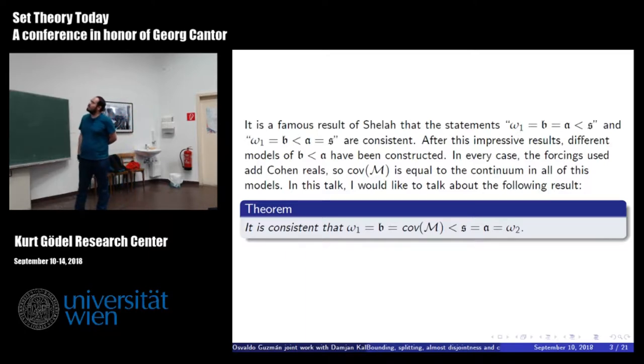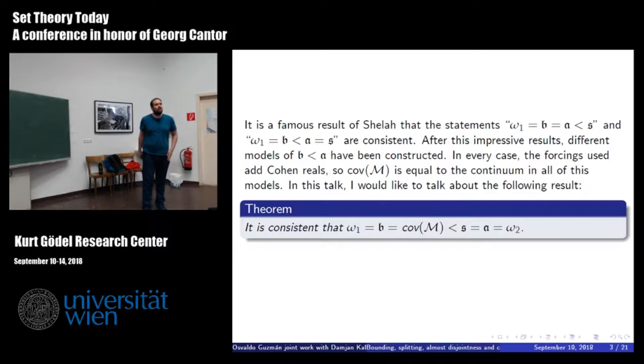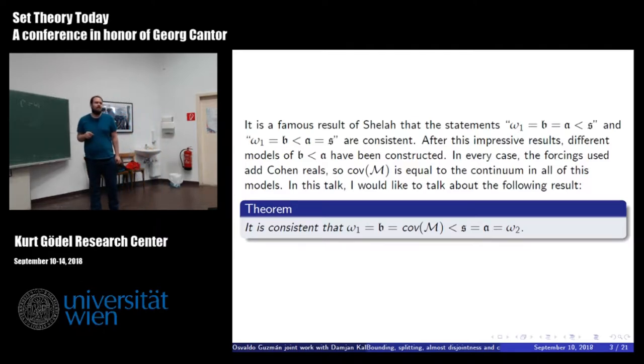So first Shelah constructed this model. And some other models of the same inequalities have been constructed after that. But in all of these cases, the forcings are Cohen reals. So we have that covering meager is equal to the continuum. But in here, I'm mostly thinking where in models where c is omega_2. So all of the previous forcings are Cohen reals and then covering meager is also omega_2. So what I want to talk about is a recent result that it is consistent to have omega_1 equal b equal covering meager less than s equal a. So it is getting b less than a without adding Cohen reals.